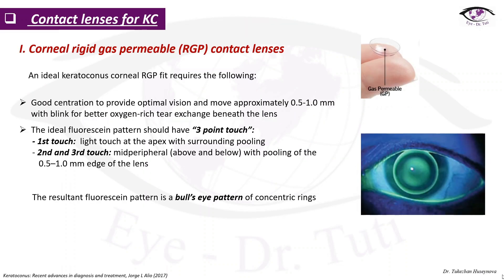Therapeutic tools in keratoconus. The most common therapeutic tool is contact lenses. Starting with corneal rigid gas permeable contact lenses: ideal keratoconus RGP fit requires good centration to provide optimal vision and movement of approximately 0.5 to 1 mm with blink for better oxygen-rich tear exchange beneath the lens. The ideal fluorescein pattern should have three-point touch: light touch at the apex with surrounding pooling, and mid-peripheral touch at the 0.5 and 1 mm edge of the lens.